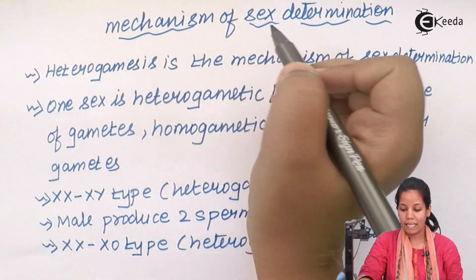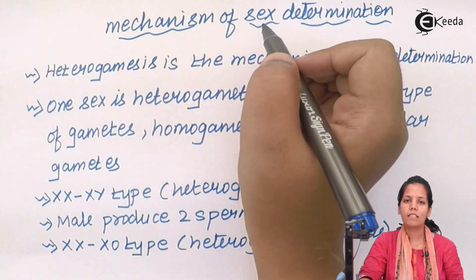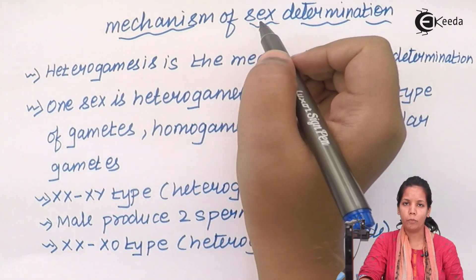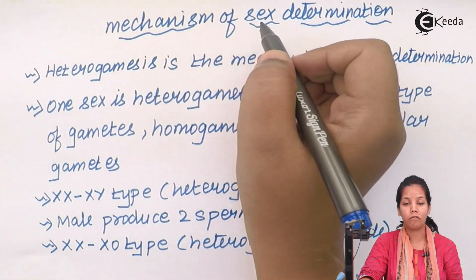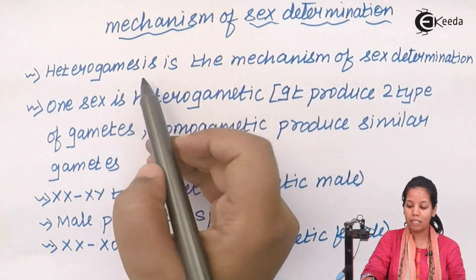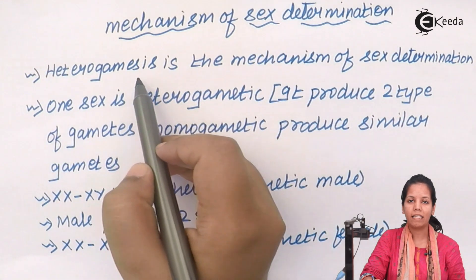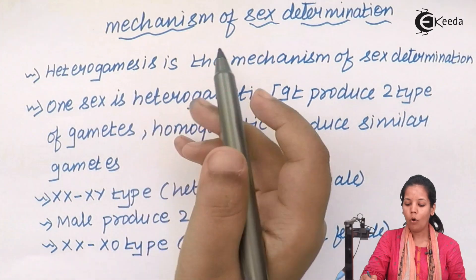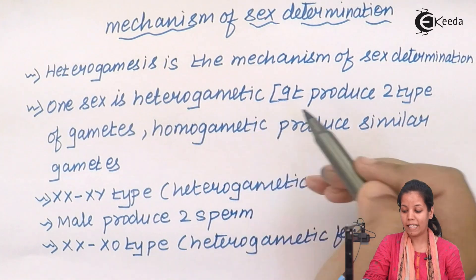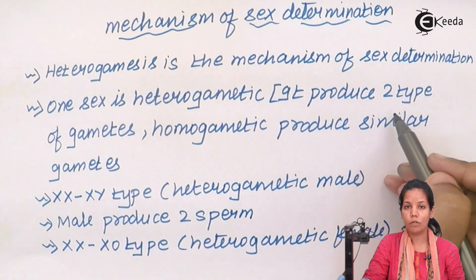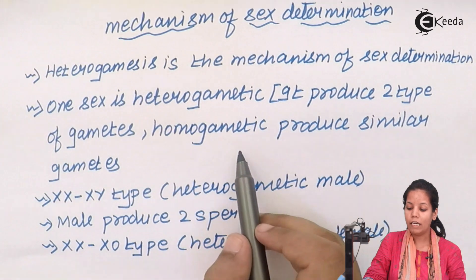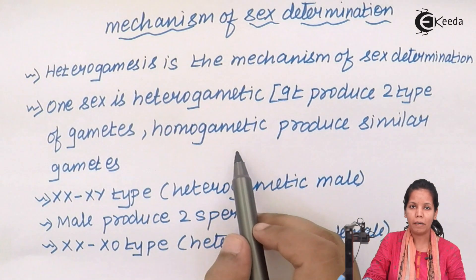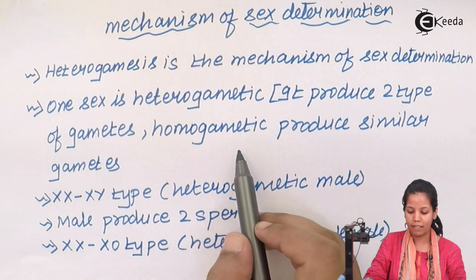Mechanism of sex determination: sex determination in human beings can be concisely said that it is the father who decides the sex of the child. Heterogammacy is the mechanism of sex determination. One sex is heterogammatic, that is, it produces two types of gametes. In human beings it is the male, whereas the female is homogammatic and produces similar gametes — X and X.